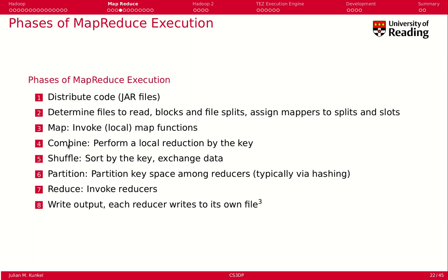There is another step called the combiner step, where we try to perform a local reduction by key. We can actually use the same reduction function for the combiner as we use in the reducer later. We do this to reduce network traffic. For example, if on a huge data block we found the word 'king' 14 times already, instead of sending 'king, 1' fourteen separate times, we send the combined count — which is much less data to transfer.